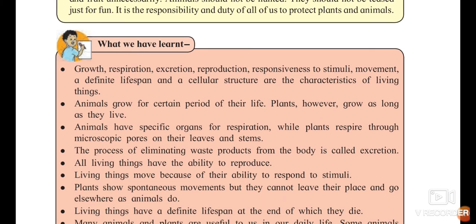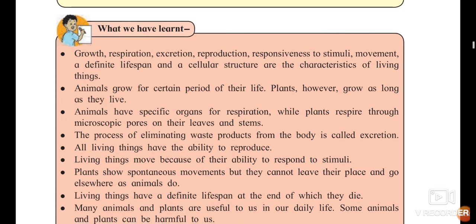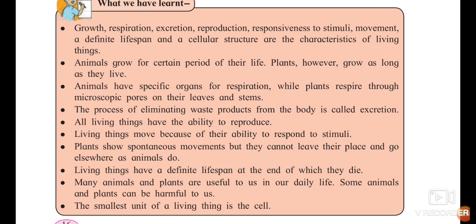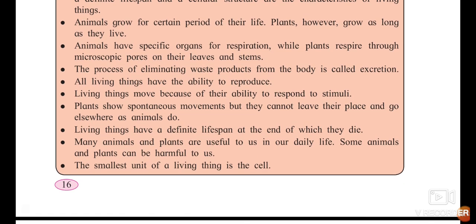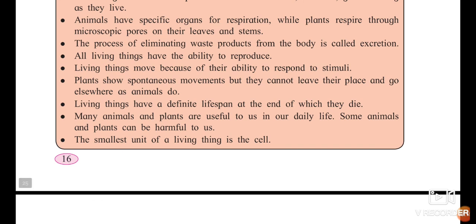Let's discuss what we have learned. Growth, respiration, excretion, reproduction, responsiveness to stimuli, definite lifespan, and cellular structure are the characteristics of living things. Animals grow for a certain period of their life, while plants grow as long as they live. Animals have specific organs for respiration, while plants respire through microscopic pores on their leaves and stem. All living things have the ability to reproduce. The process of throwing out waste substances from the body is called excretion. The smallest unit of a living thing is called a cell. I hope you have understood this lesson. The question-answers based on this lesson will be given shortly. Thank you.